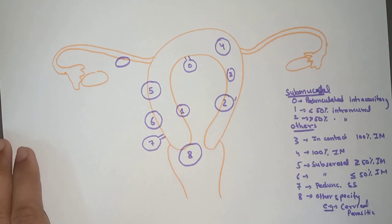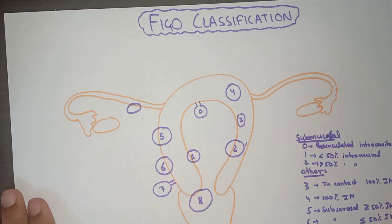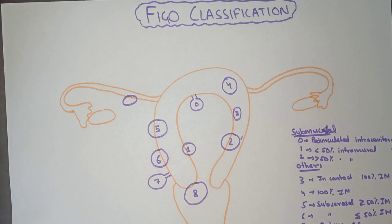So this is the classification of fibroids, which is the FIGO classification, and this is very important. Please like this video and subscribe to the channel for more videos. Thank you.